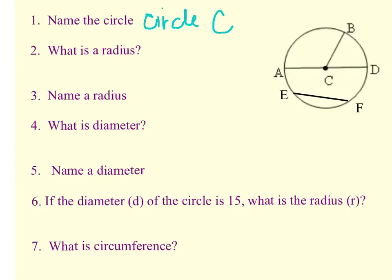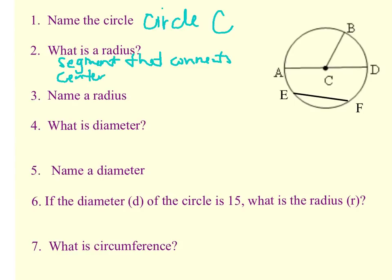Number two: what is a radius? A radius is the segment that connects the center point to any point on the circle. You can see in this picture that C going to A would be considered a radius, or C going to B would be considered a radius. So let's write down the definition: a radius is a segment that connects the center of the circle to any point on the circle.